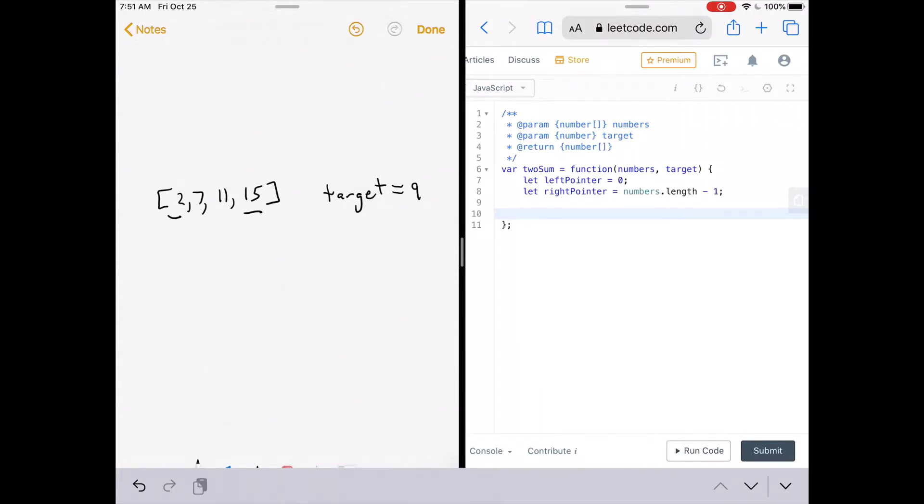All right, so that would put the second pointer here. Okay, so remember that our result needs to be in an array. So we need to create an array. So let results equal empty array. So this will hold the indices of the elements that add up to the target, but not really the indices. It's more like the each index plus one.